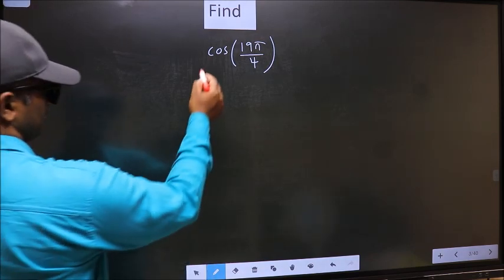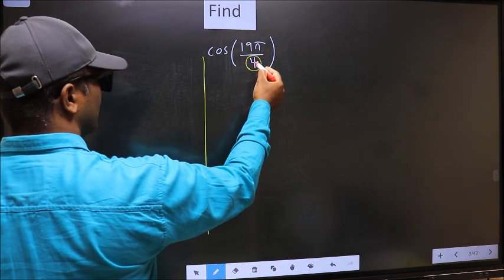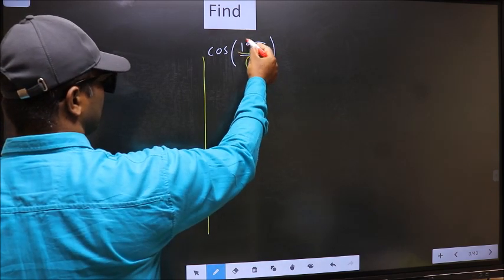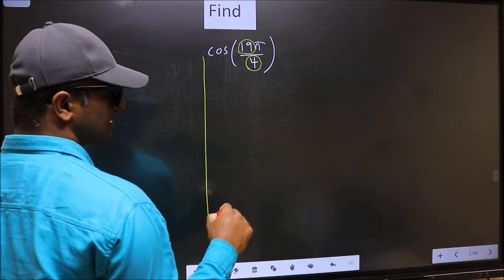See, in the denominator we have 4, in the numerator 19. Now you should check,